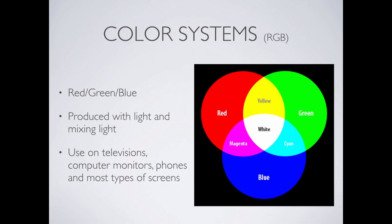We have to stop and talk about color systems. You've probably already seen this when opening InDesign or Illustrator — it asks what color mode you want to work in, and there are usually two choices: RGB mode and CMYK mode. I want to talk about what each of those mean and why it matters which one you pick.